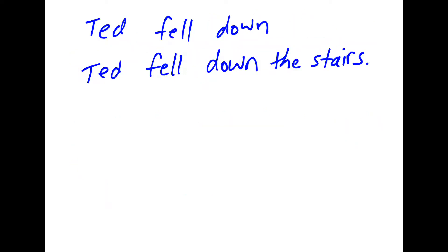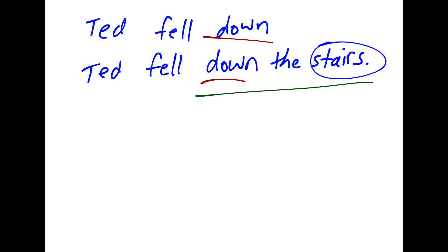Another key important detail with prepositions is that sometimes the same word can be an adverb or a preposition, depending on context. For example, 'Ted fell down' — 'down' is an adverb, whereas 'Ted fell down the stairs' — 'down the stairs' is a prepositional phrase. It has to do with prepositions requiring objects. In the first example, 'down' just tells us where Ted fell. But in the second example, 'down' shows the relationship between the verb 'fell' and the noun 'stairs.'